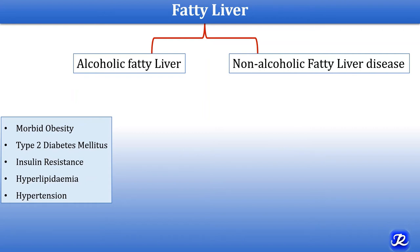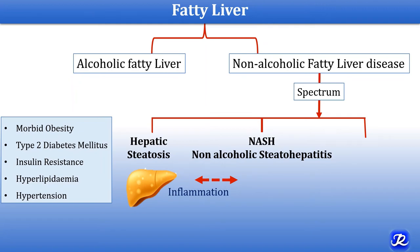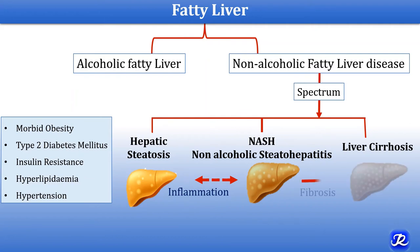Non-alcoholic fatty liver disease is related to metabolic syndrome. The spectrum of NAFLD ranges from less severe to more severe: first is hepatic steatosis (fatty liver) where triglyceride accumulates in hepatocytes; if that accumulation is associated with inflammation it is called NASH — non-alcoholic steatohepatitis; and the third, most severe condition is liver cirrhosis, where fat accumulation with inflammation is associated with extensive fibrosis.